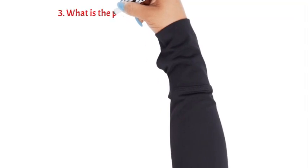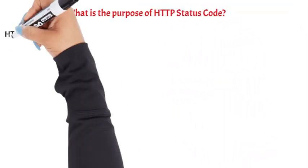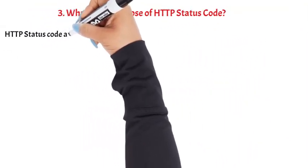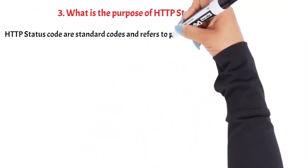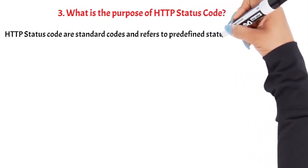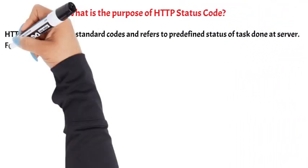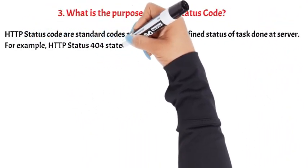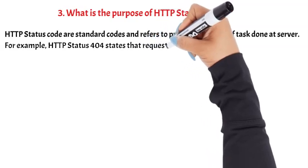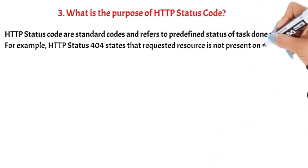Question 3: What is the purpose of HTTP status codes? HTTP status codes are standard codes and refer to predefined status of a task done at the server. For example, HTTP status 404 states that the requested resource is not present on the server.